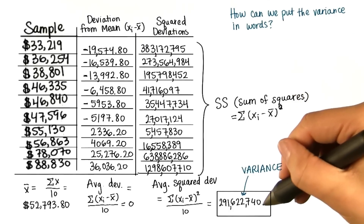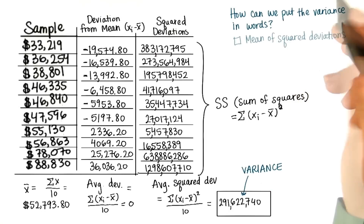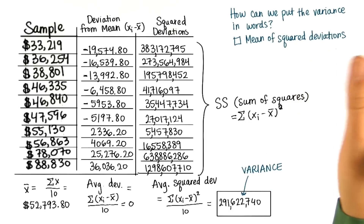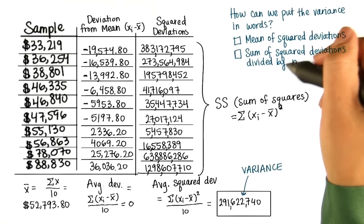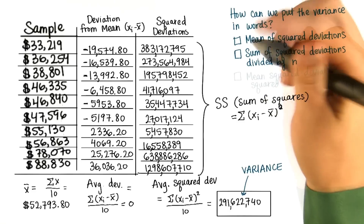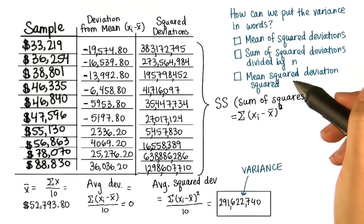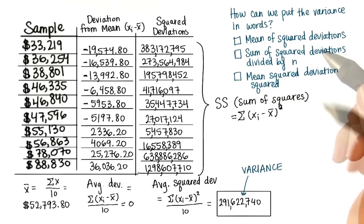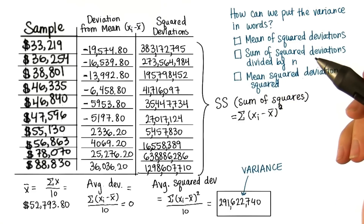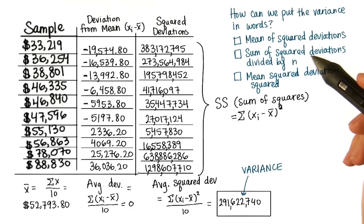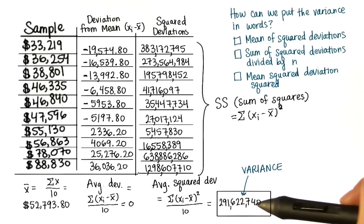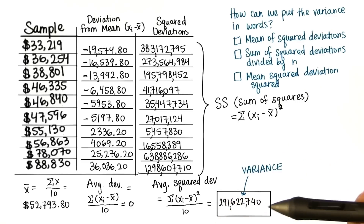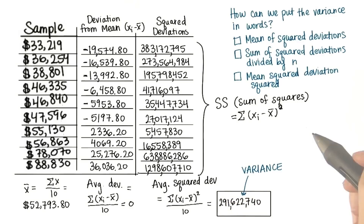How can we put this variance in words? Mean of squared deviations, the sum of squared deviations divided by n, or mean squared deviation squared? There may be more than one correct answer. The purpose of this quiz is to make you better understand what the variance is, and it helps to put it in words.